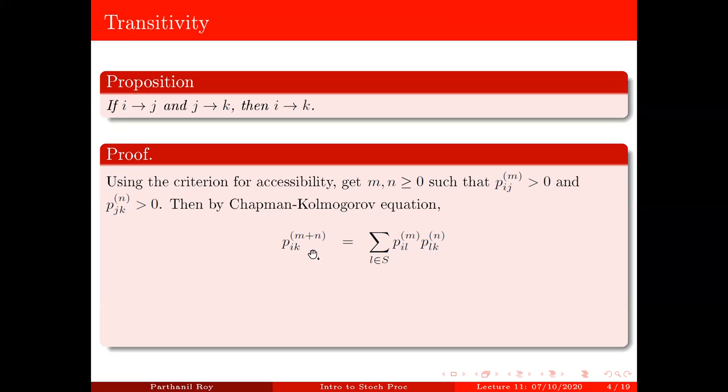this is nothing but sum over all l in s of pilm times plkn. So basically you go from i to k in m plus n steps, and you first go from i to l in m steps, and then go from l to k in n steps. Now, of course, l can be anything in s, so therefore you have to take a sum.